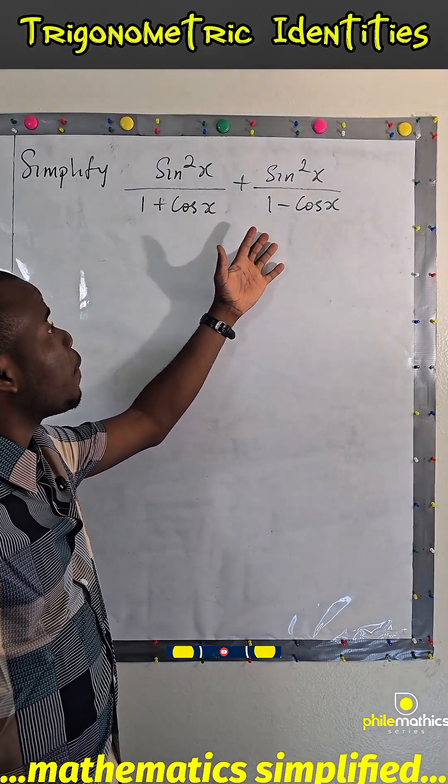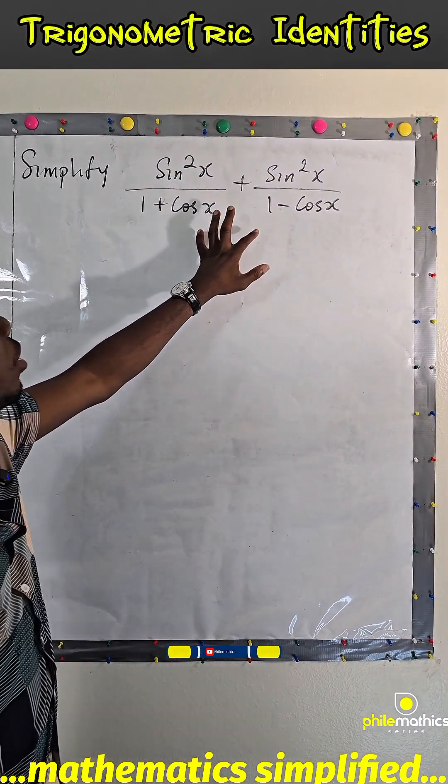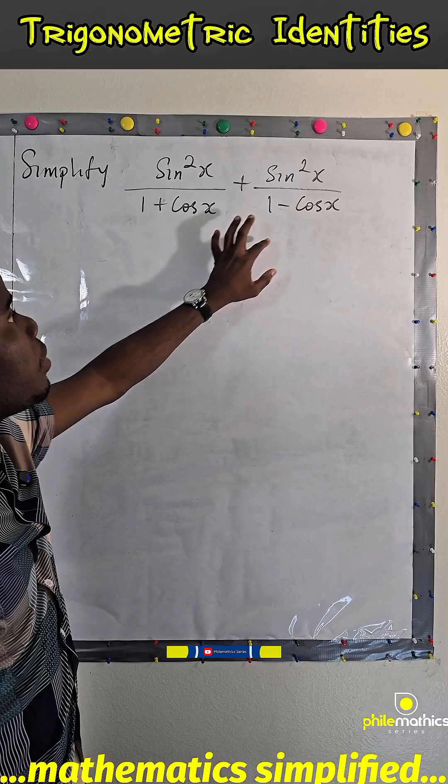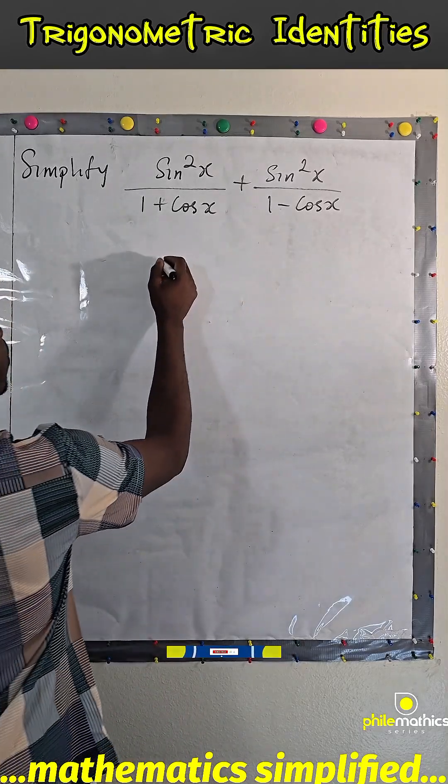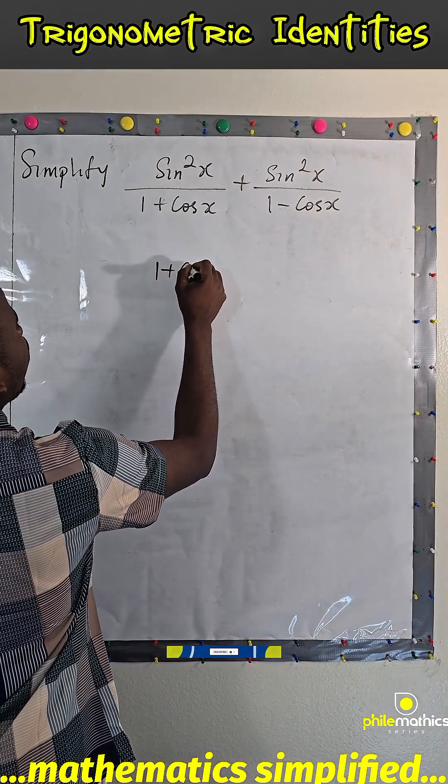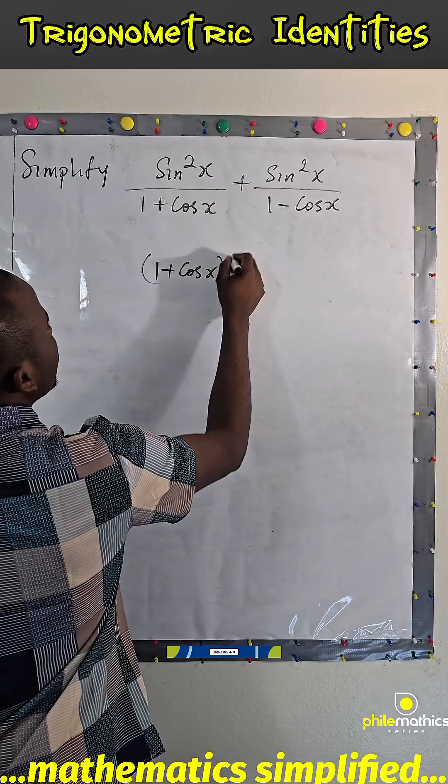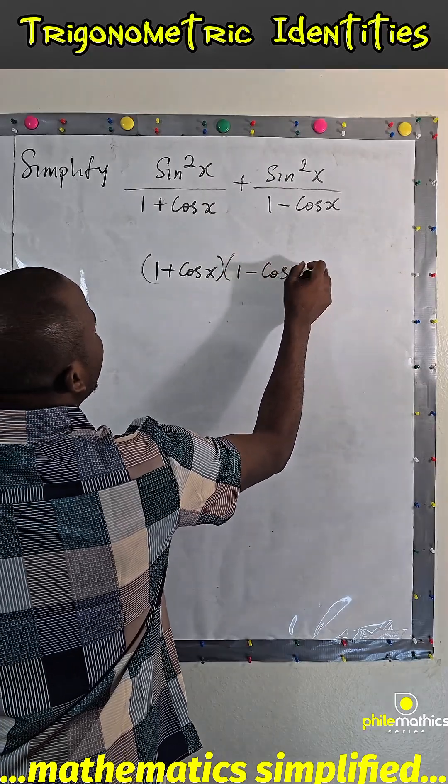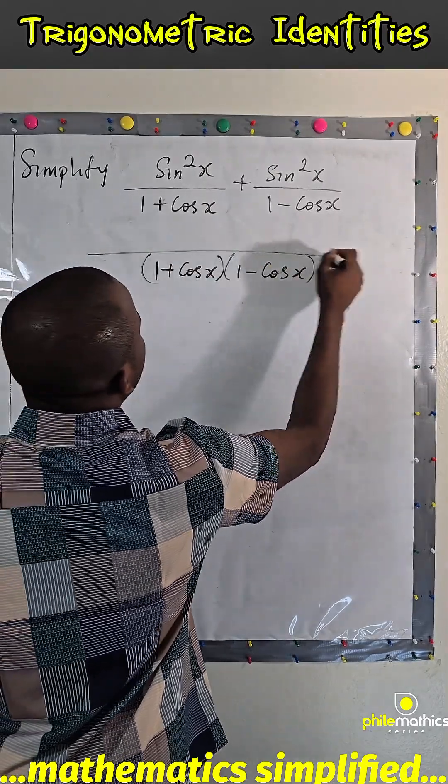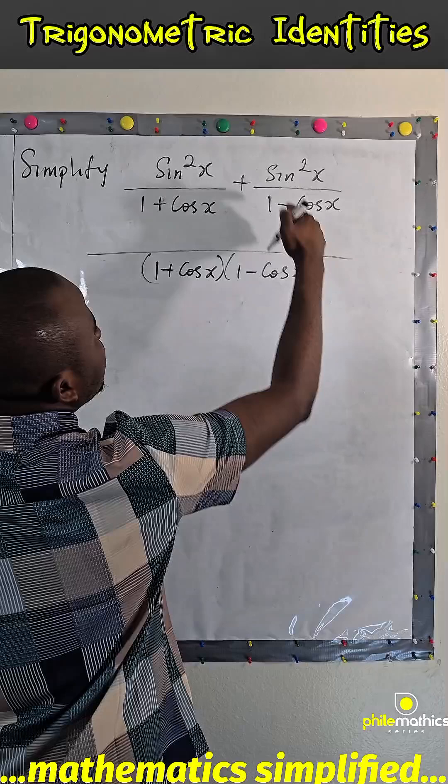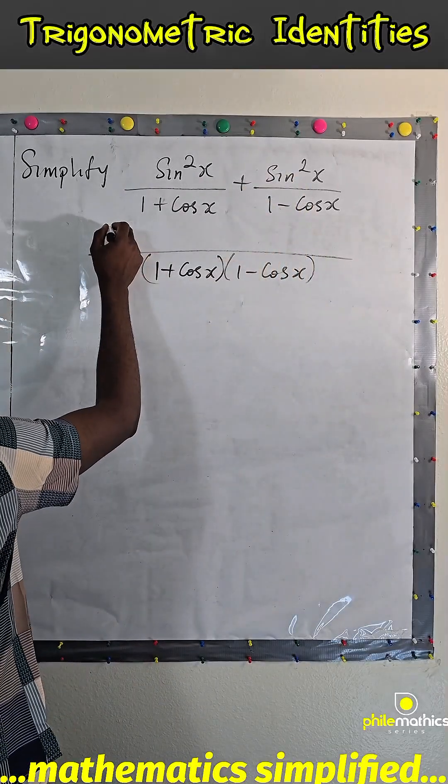How do we simplify this? We can start by looking for the LCM. The LCM is simply 1 plus cos x, 1 minus cos x. And sine square x is common in the numerator, we can factor it out.